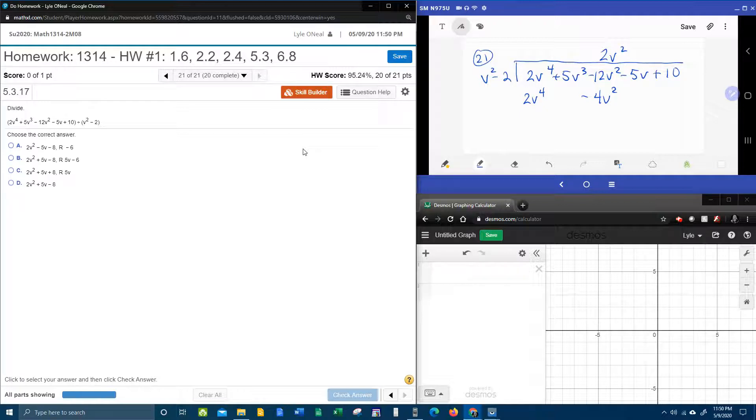And again, if you've watched the previous two videos, you know the next step says draw the line, change the sign, and then combine. 2v to the fourths cancel. Look, the 5v to the third, he's going to fall through the hole. There's no one for him to go with, he just falls through. And then I've got negative 12v squared plus 4v squared. That is negative 8v squared. If you feel like it, you can go ahead and bring down the negative 5v and the 10. Not required, but if it feels good, do it.